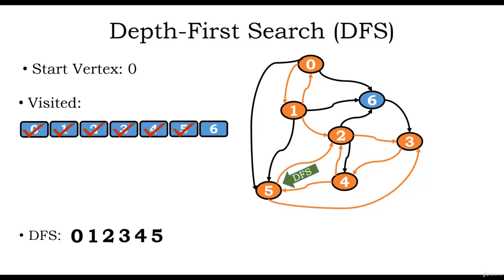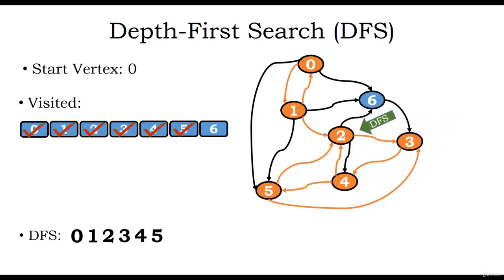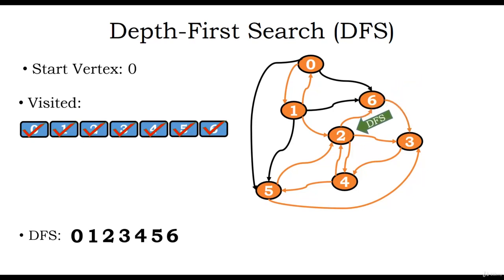We move back to vertex 4. From vertex 4 there are no outgoing edges, so we move back to vertex 3. Vertex 3 also has no outgoing edges, so we move back to vertex 2. Vertex 2 has an outgoing edge to vertex 6, and vertex 6 has not yet been visited, so we visit vertex 6 and mark it as visited. Vertex 6 has an outgoing edge to vertex 3, but vertex 3 is already visited. So we move back to vertex 2 and then back to vertex 1.